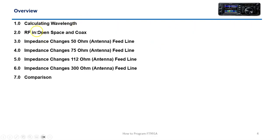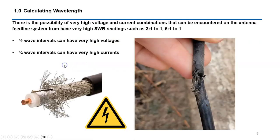I'll give you some examples of various antenna feed line impedances and what the voltage and current ratios are doing. There is a possibility of very high voltage and current combinations that can be encountered on the antenna system from a very high SWR reading such as 3.1 to 1 or 6.1 to 1. These high SWR readings can result in extreme swings of voltage and current ratios at quarter and half wave intervals. This is why we have to be careful.